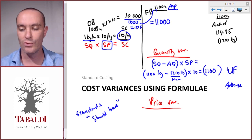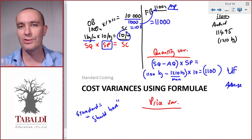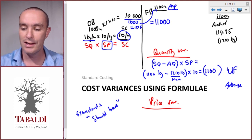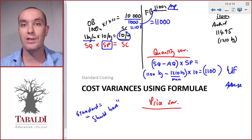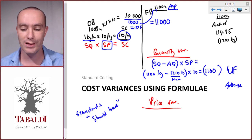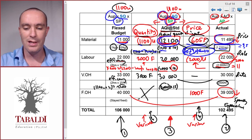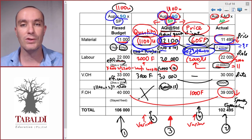You can indicate unfavorable with U, UF, 'adverse,' brackets, or a negative sign — brackets or U are usually clearest. Checking against our table: 1,100 unfavorable — it matches.